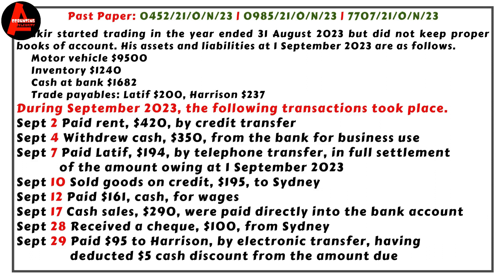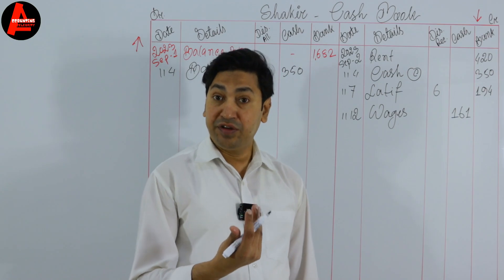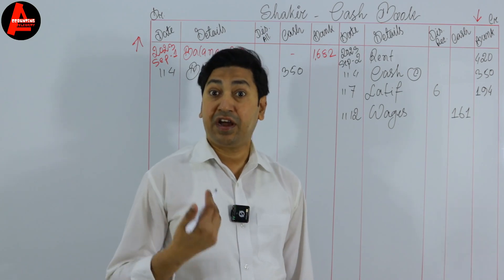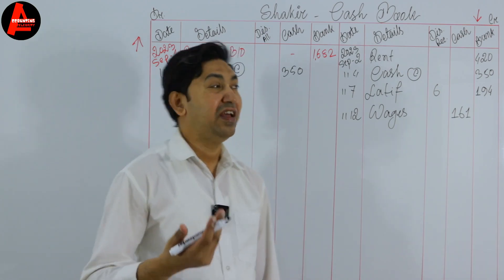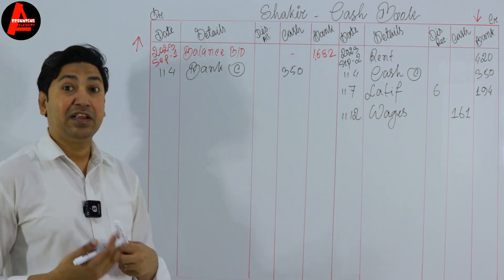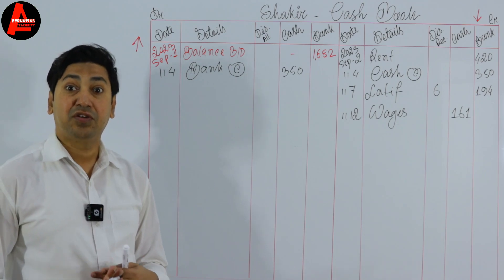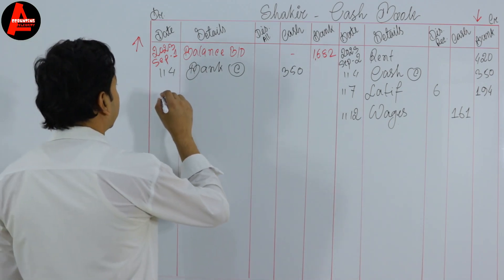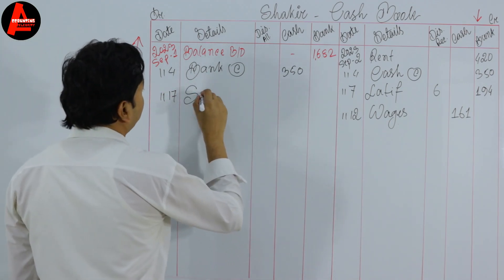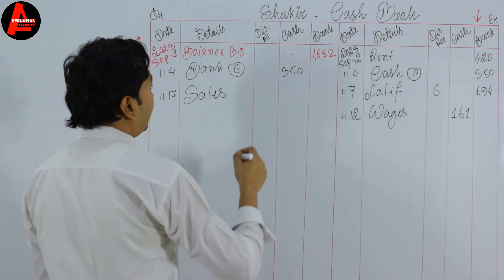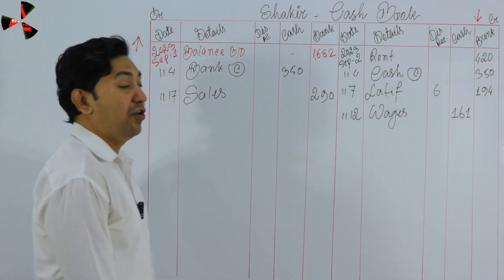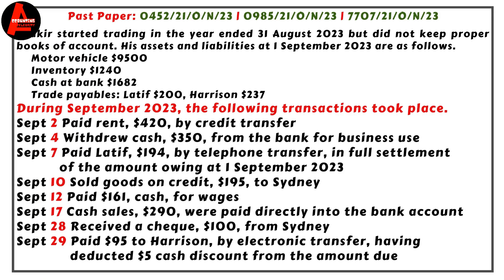September 17: cash sales 290 dollars, paid directly into the bank account. We sold goods and received money, but we deposited this cash directly into the bank. So our bank balance increases. Sales is revenue, and revenue always comes on the debit side. We write date September 17, sales in the detail column, and 290 dollars on the bank column.